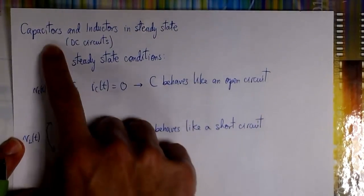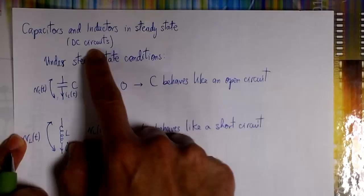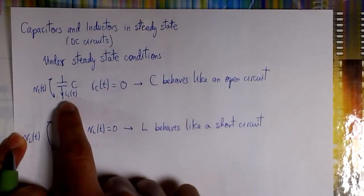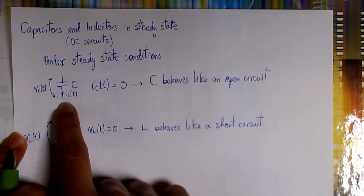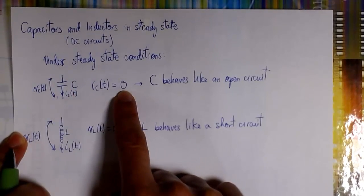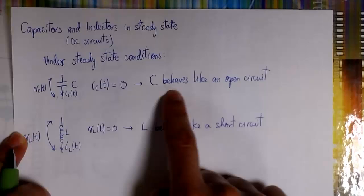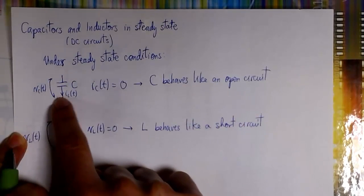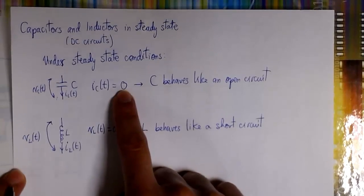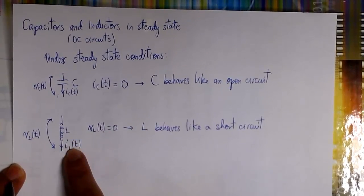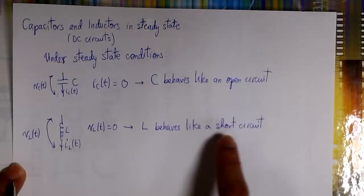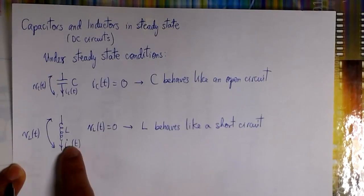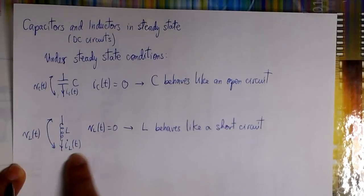So in a DC circuit, a capacitor is just an open circuit in a steady state — no current, just an open circuit. There will be a voltage there but no current. And the inductor: we are going to have a current flowing there. It is a short circuit but there won't be any voltage between its terminals, so it behaves like a wire — no voltage.